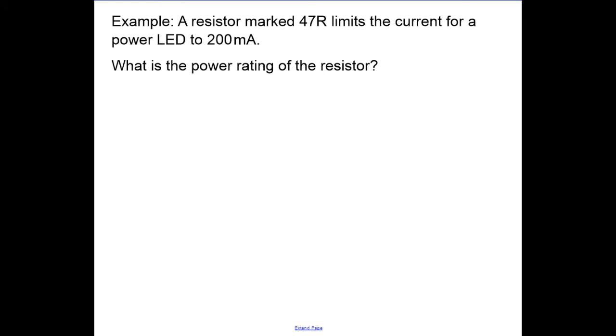A resistor marked 47R, where R means ohms, limits the current to an LED to 200 milliamps. We should know that 200 milliamps is equivalent to 0.2 amps because we always work in standard units.